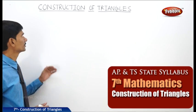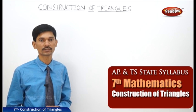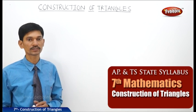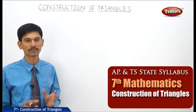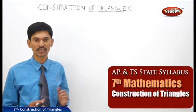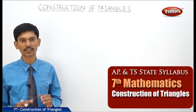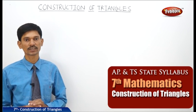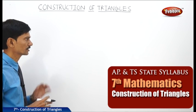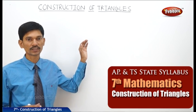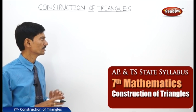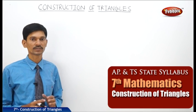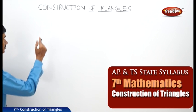Now let us start the next chapter: Construction of Triangles. In your earlier classes, you have learnt how to draw a line segment, how to draw an angle, and how to construct a triangle with given measurements. The three sides and the three angles are the six elements of the triangle. What are the minimum required measurements to construct a triangle? We need not know all six elements.